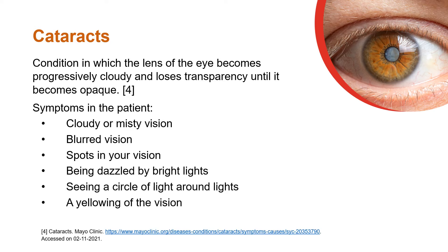The symptoms of cataracts include cloudy or misty vision, blurred vision, spots in your vision, being dazzled by bright lights, seeing a circle of light around lights, and a yellowing of the vision.